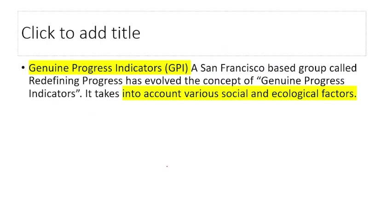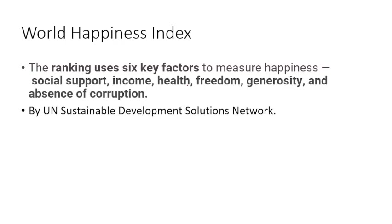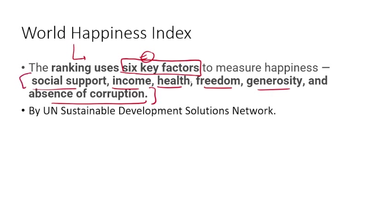The Genuine Progress Indicator considers social and ecological (environmental) factors and was formulated by the San Francisco-based group Redefining Progress. The World Happiness Index ranks countries on 6 key factors: social support, income, health, freedom, generosity, and absence of corruption. It is published by the UN Sustainable Development Solutions Network (UNSDSN).